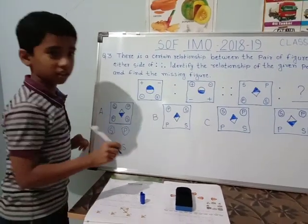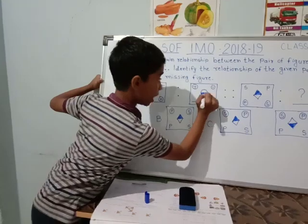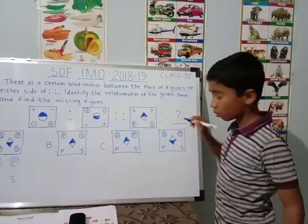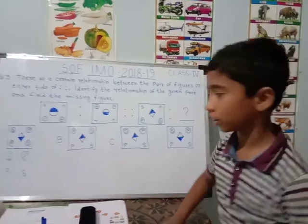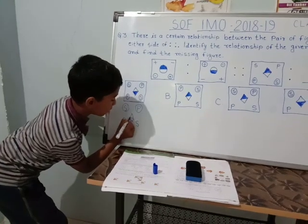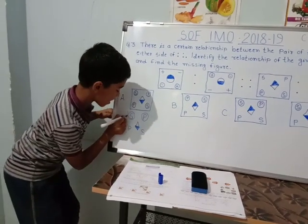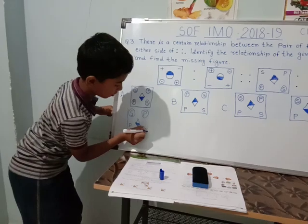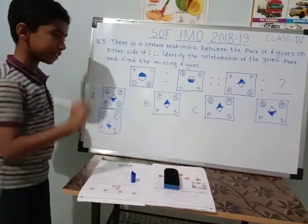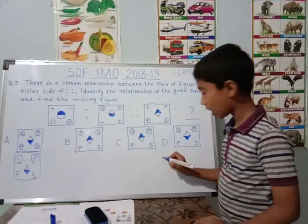Now look at the circle pattern in the figure. The down figure is dark and the up figure is not dark here. So for the next, the up figure should be dark and the down should not be dark. We will draw this figure accordingly — make a square shape. The answer would be this figure, and you will find it as answer D.